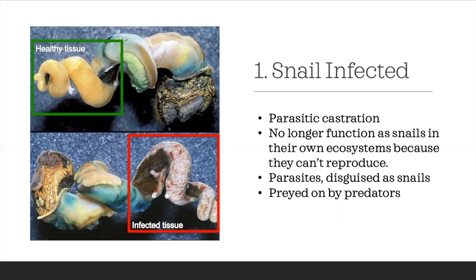Looking at this photograph here, we can see what the snail looks like when you remove its shell. On the top, we have healthy snail tissue, and the green tissue you see is a healthy gonad. On the bottom, you can see that the green tissue has been replaced by white parasitic tissue. In fact, you can see little tiny white sacs that are spilling out of the snail, where each one of these sacs is actually making more parasite stages, and these stages will then leave the snail swimming out into the water, called cercariae. Essentially, these snails no longer function as snails in their own ecosystem because they can't reproduce — they're simply parasites disguised as snails. Also, these snails are getting eaten by predators, meaning that parasitic tissue is an important component of the predator's diet.